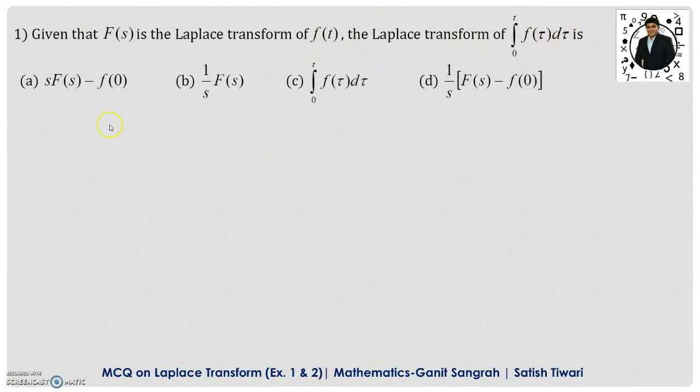Here we have four options, and option b is correct because we are finding the Laplace of an integral. This is a property of Laplace transform, and we have the formula that is f of s upon s. Otherwise, the answer can be found by using the definition of Laplace transform. So option b is correct.